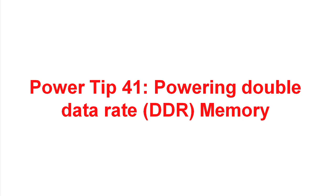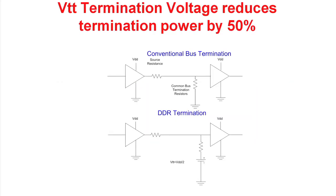In this PowerTip, we will discuss powering double data rate memory, or DDR memory. Double data rate memory is called double data rate because the clock is used both on the rising edge and the falling edge to clock the data into the memory devices. Double data rate operates at very high switching speeds, and consequently bus termination resistors are needed to control the impedance on the clock lines.